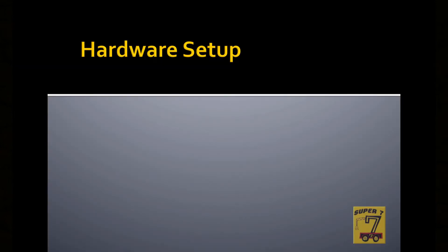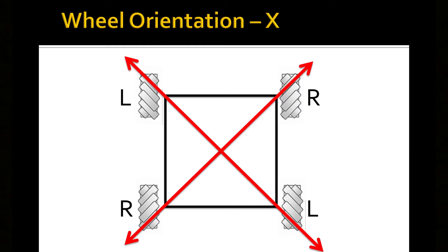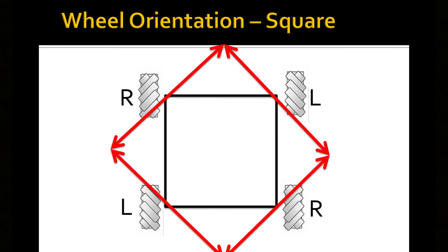When you're building the chassis, you want to make sure the wheels have a force orientation of either an X pattern or a square pattern. This is to make sure you have two different types of wheels on both sides.